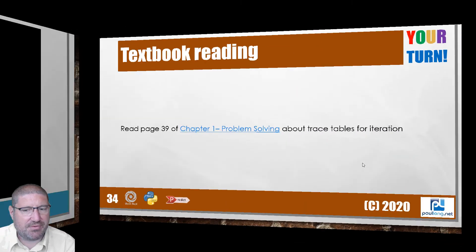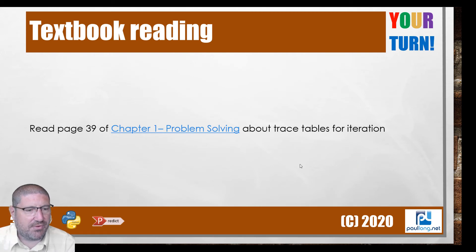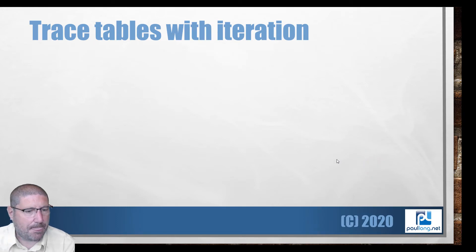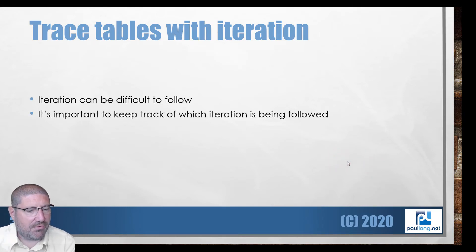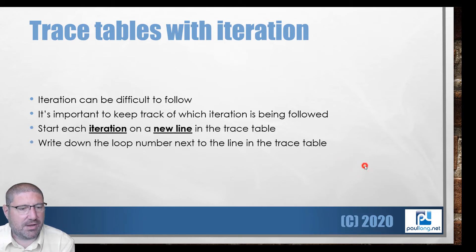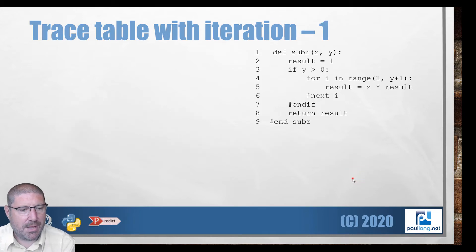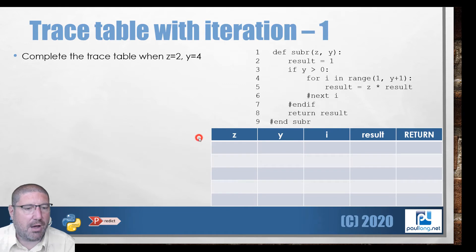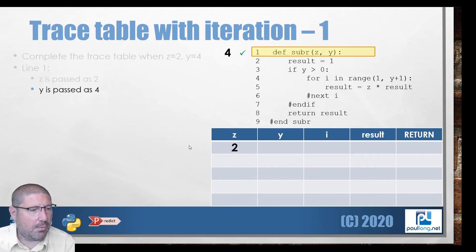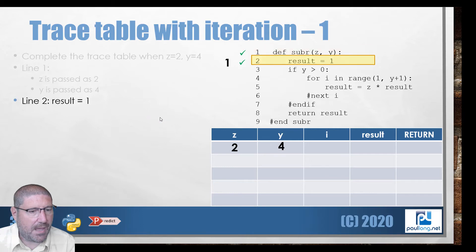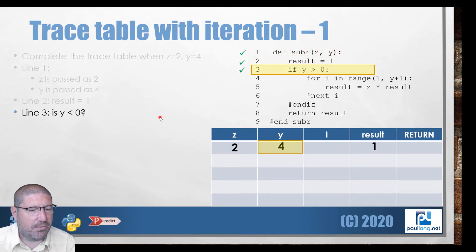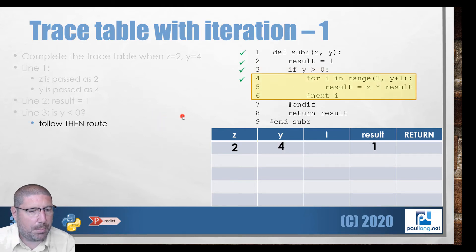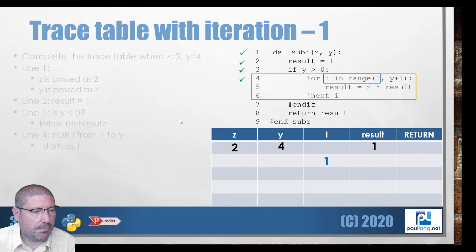Now we're going to start looking at another example of how an animation is used in the textbook, and then we're going to have a look at how it links to an activity. Here are some instructions given to students about how to write their trace table when they're using iteration, and then here is an example working through it. The advice given in the last slide was to start a new line each time we go through an iteration. What we're doing is putting the data through line by line in the code, going through this for loop, and for each iteration of the for loop you can see that we're going to go through with i starting as one, it's going to end up y plus one which is four, and we're going to use a new line for each iteration.